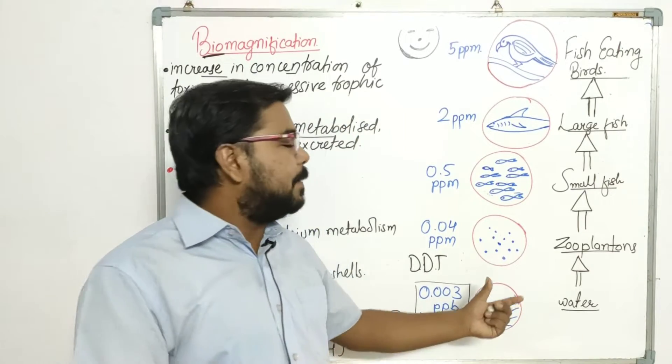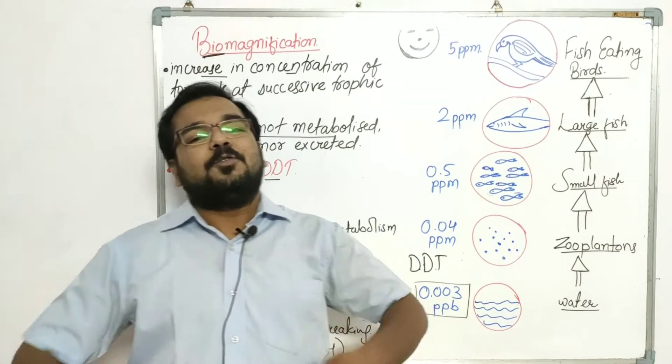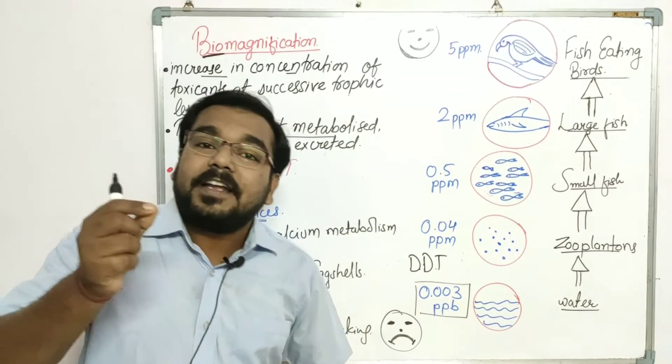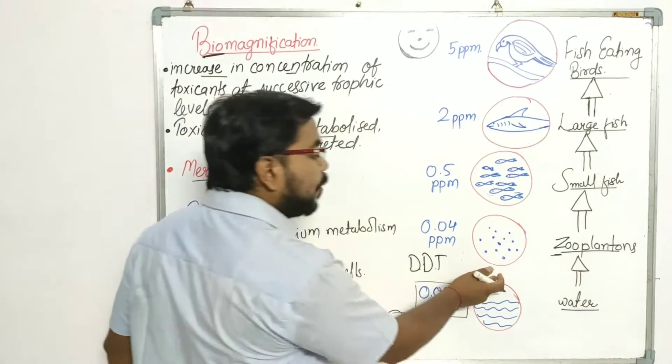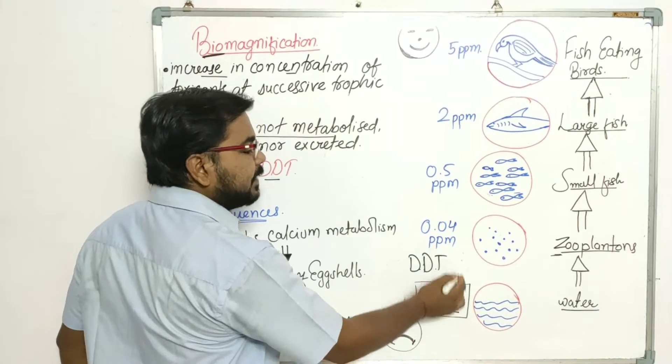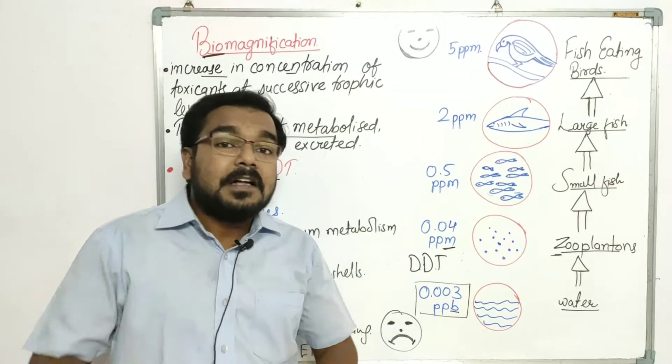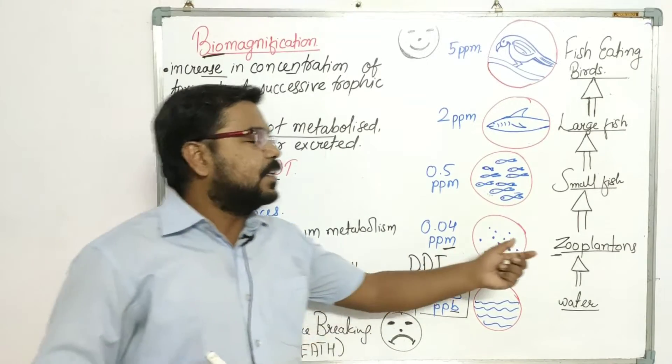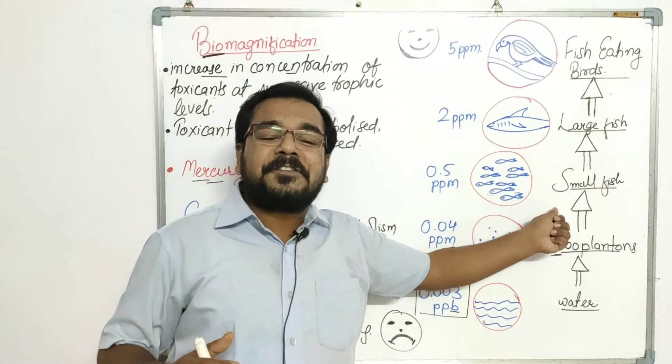This water is being used by the zooplanktons. So they consume water and gradually we observe that in zooplanktons the concentration increases. Now notice that parts per billion is increased and parts per million is 0.04. Now who eats zooplanktons? They are consumed by small fishes.